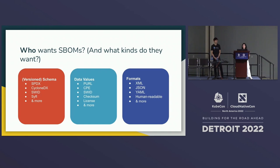A third use case is using SBOMs for looking at dependency drift in applications. In that case, stakeholders might not even care about the schema — maybe they just need it human readable, and want versions or chain-of-custody information. Conversion between different schemas can also be lossy at this point, so you need to nail down your needs ahead of time to provide the richest information possible.